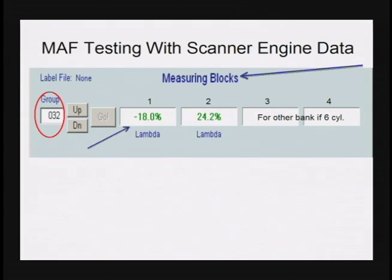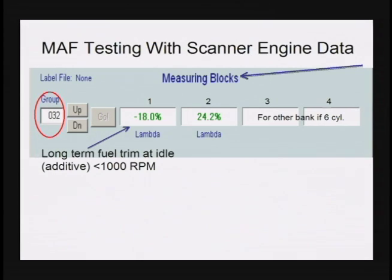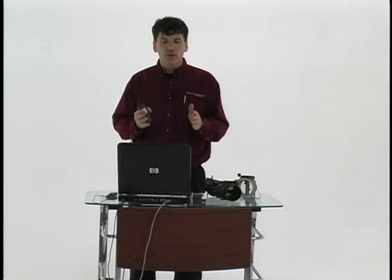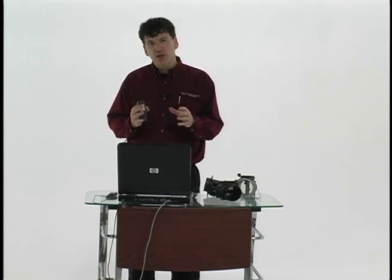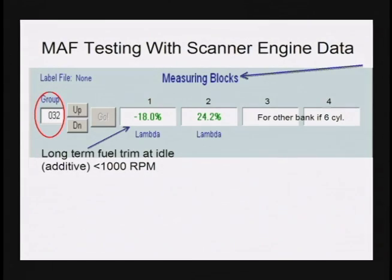Block number one is what we call additive. Additive is a number that Volkswagen and Audis use that represents what is more commonly called long-term fuel trim at idle. Additive fuel trim is fuel trim done at less than 1,000 rpm. So additive can be very handy once you know what it is, because it tells you what's going on at a specific rpm range. In this case, less than 1,000 rpm — what we have is minus 18%, which is the computer pulling fuel away from this car.